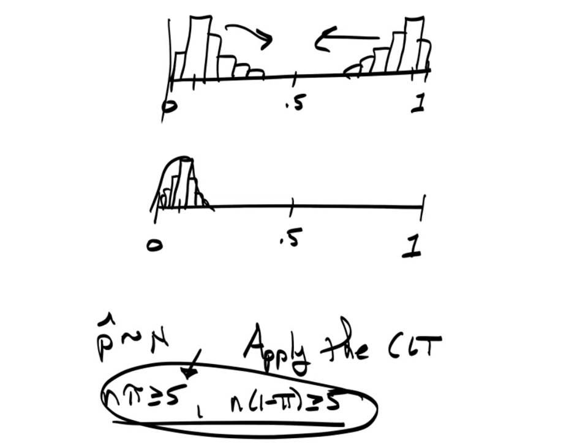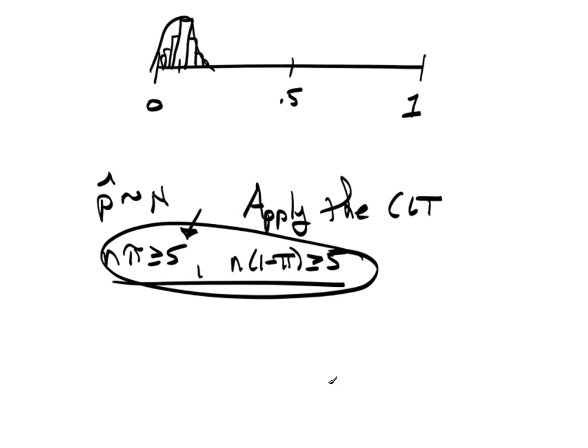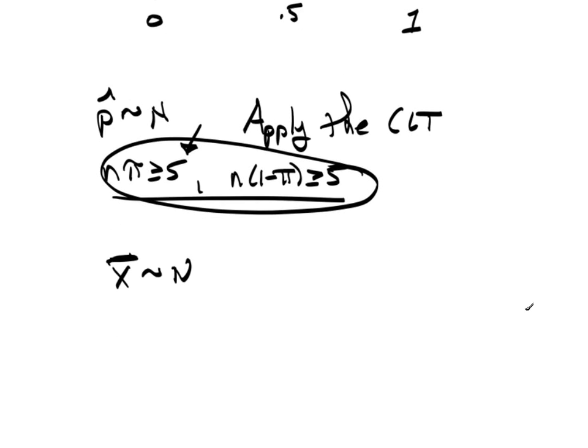Likewise, when we're talking about the mean, you need to show, well, actually, the assumption at first is x bar is distributed normal. And that's reasonable because of one of a couple of things. Number one, the CLT applies, which you would show. Or number two, we know x is distributed normal.